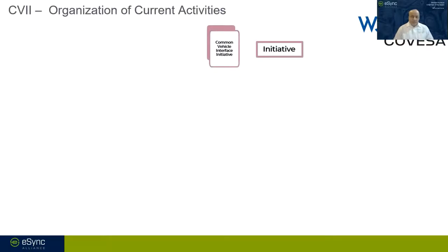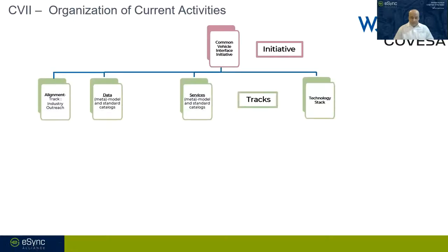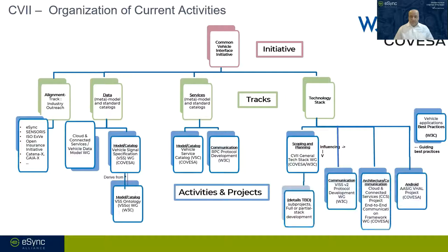To give perspective on how expanded the initiative has become, and how Covisa and eSync Alliance play a part: it starts with the CVII initiative, which breaks down into tracks, and from there into many activities and projects. We form a small portion of those activities. The liaison touches two aspects: the catalog and the signal specification.